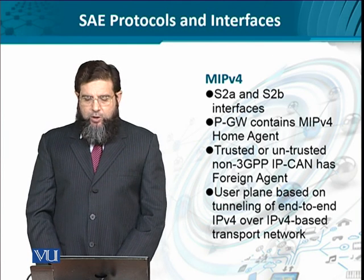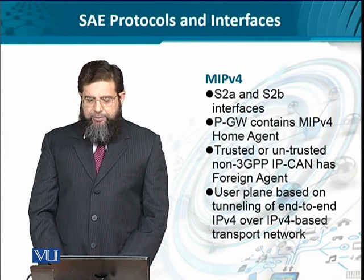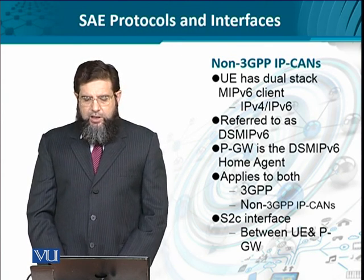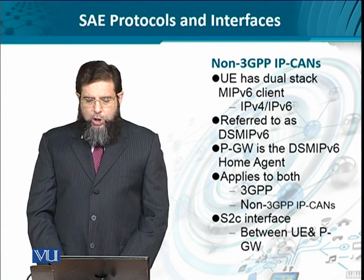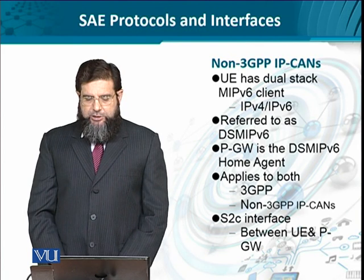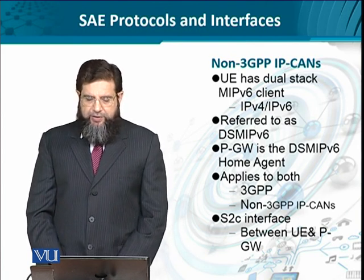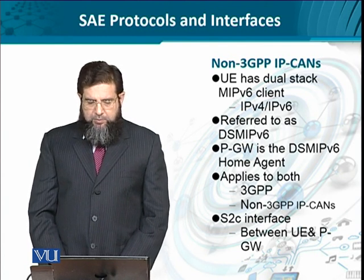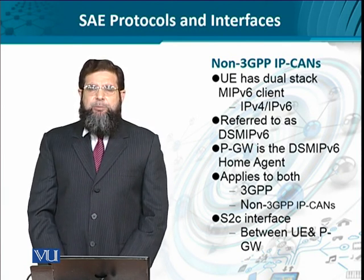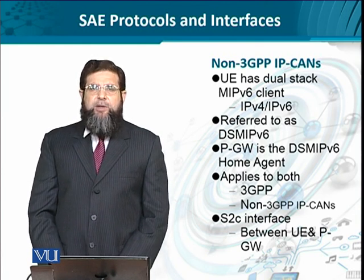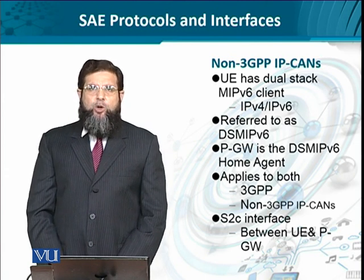The user plane or data plane is actually based on tunneling, that is IP-in-IP. As far as non-3GPP IP CANs are concerned, the user equipment can implement Dual Stack Mobile IP version 6 — that is, both IPv4 and IPv6 clients can be supported. This is known as DSMIPv6. In this case, the home agent resides at the Packet Gateway. Although this scenario is discussed under non-3GPP IP connectivity access networks, it is equally applicable to 3GPP as well, since the home agent and foreign agent placements remain at their respective positions.